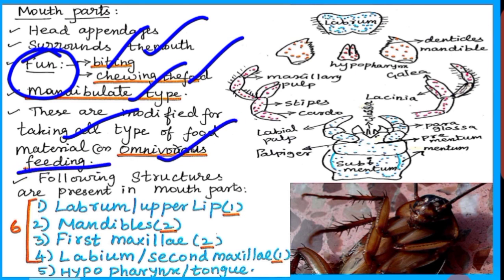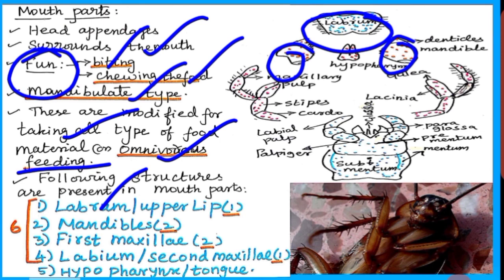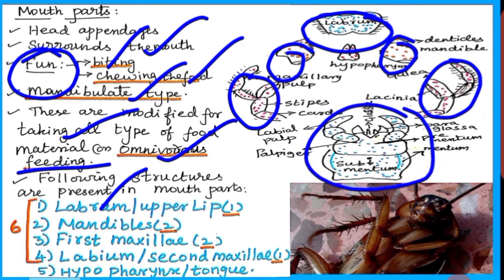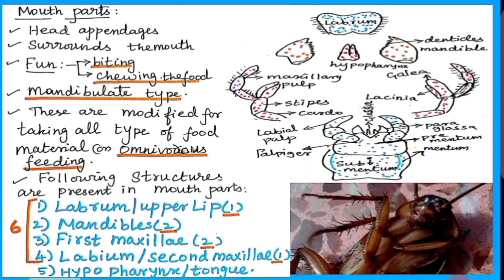Mouthparts have the following structure: labrum (upper lip), two mandibles, first maxilla, a pair of labium (second maxilla), single. Totally, six mouthparts play a vital role. The pre-oral cavity has a hypopharynx, which acts as a tongue. These are the regions present in the mouthparts.